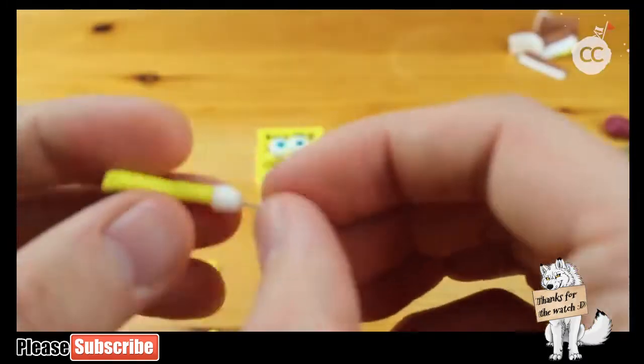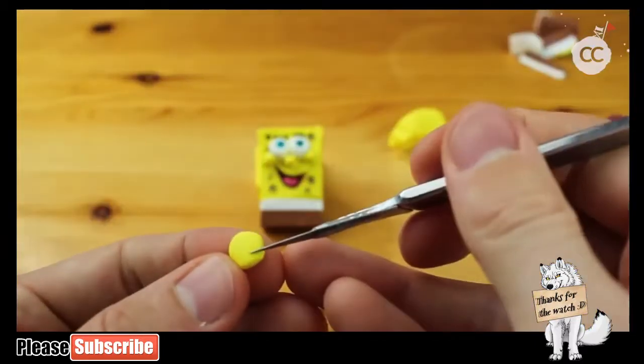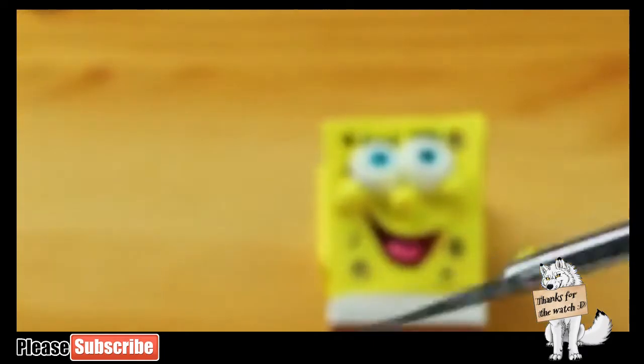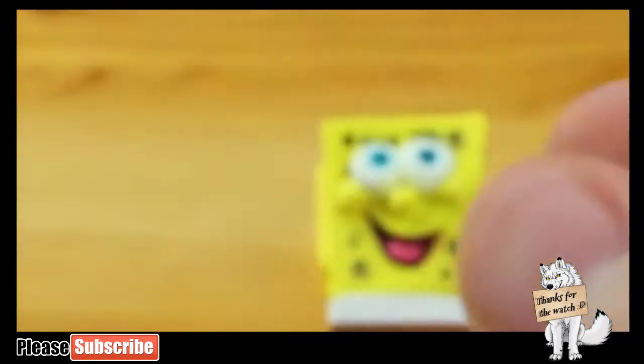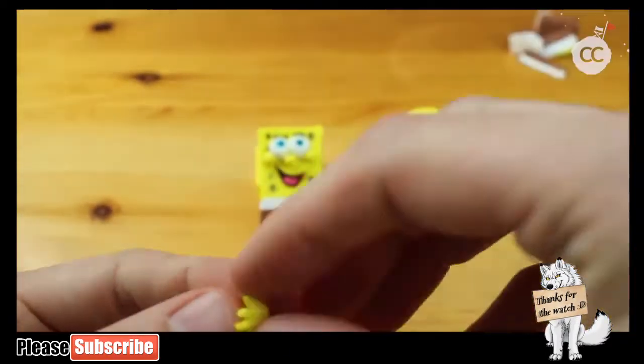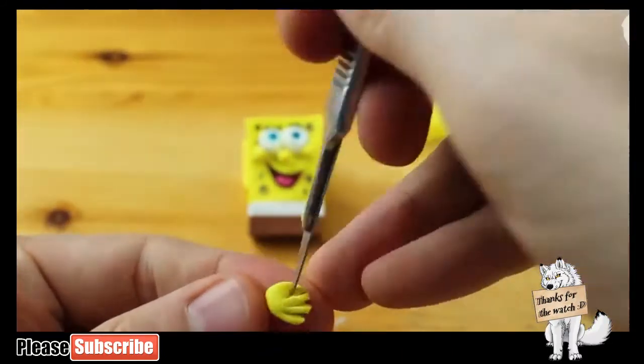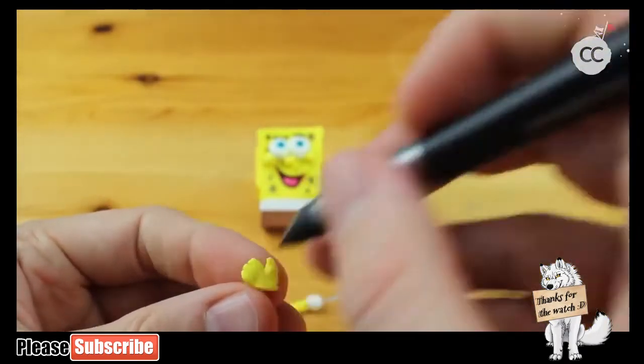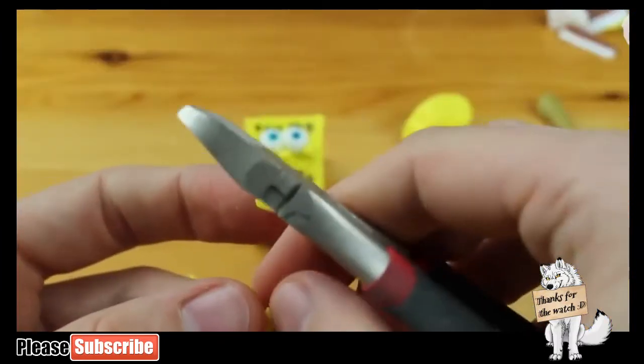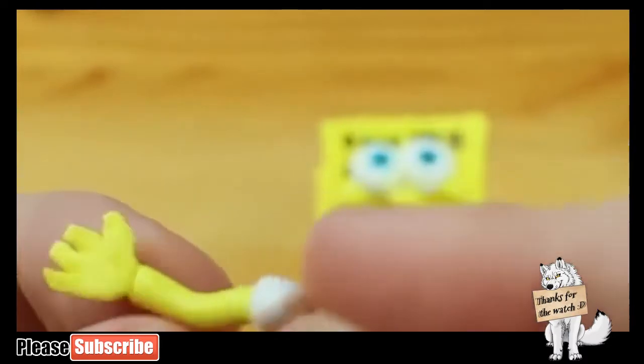Back to the seven deadly sins. Number two, wrath. Wrath involves feelings of hatred and anger, and there's one character which perfectly fits. It's Squidward. He hates his life, usually hates SpongeBob, and is pretty much very angry most of the time. Number three, greed. Who is greedy? It's Mr. Krabs, of course. He actually sang about the power of greed in Selling Out. Let's jump back to the creation.